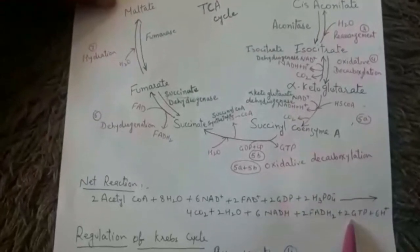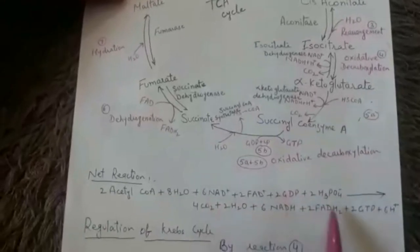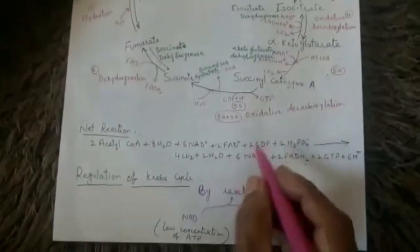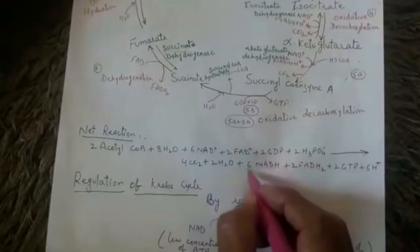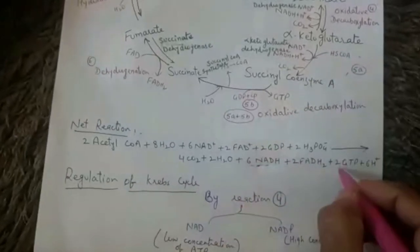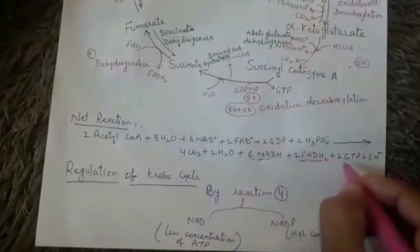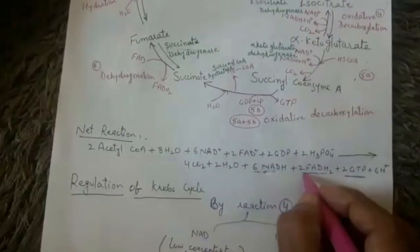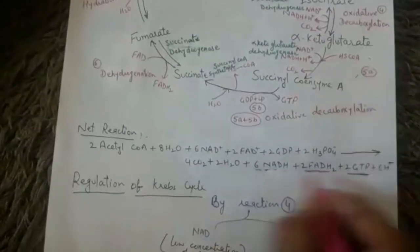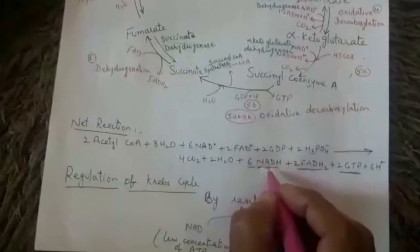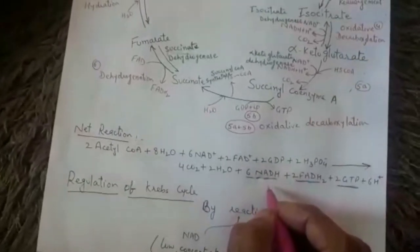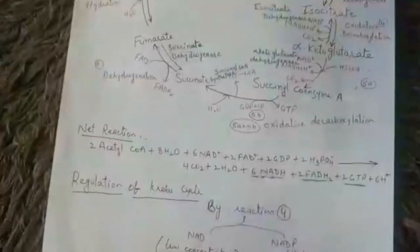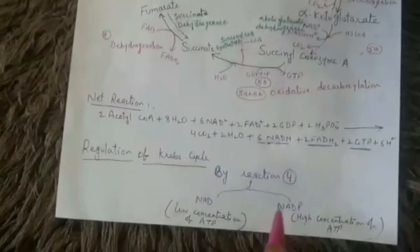So the net gain per two acetyl coenzyme A through the Krebs cycle is: six NADH, two FADH2, and two GTP. Keep this net gain in mind, because in the next video we will study the electron transport chain where we will calculate ATP molecules.